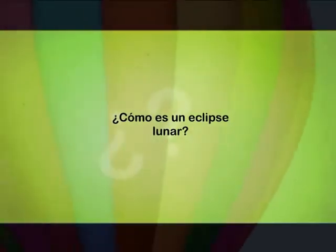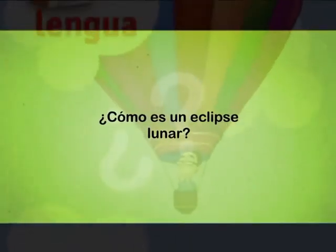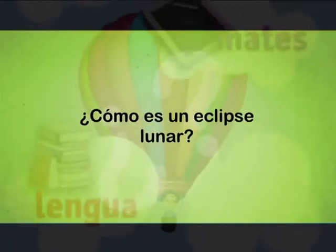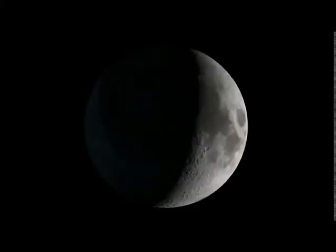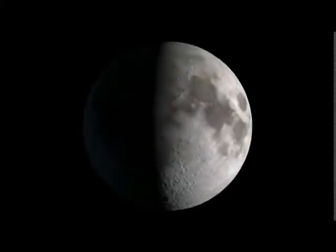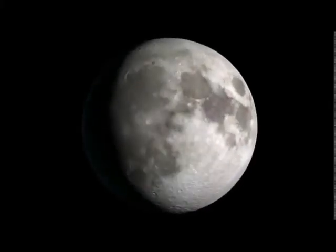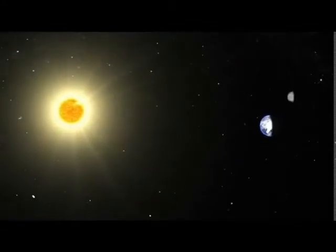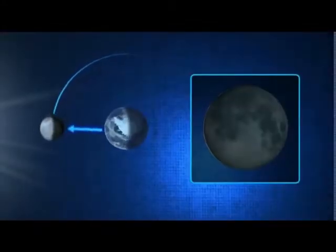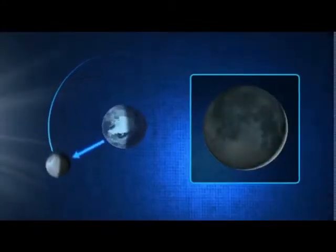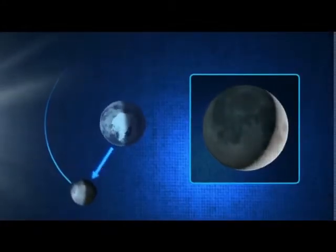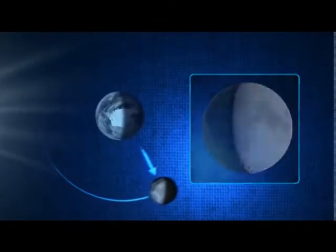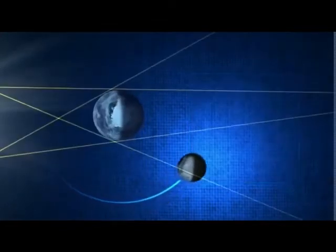¿Cómo es un eclipse lunar? En el eclipse lunar, la Tierra se interpone entre el Sol y la Luna, oscureciendo a esta última. La Luna entra en la zona de sombra de la Tierra.